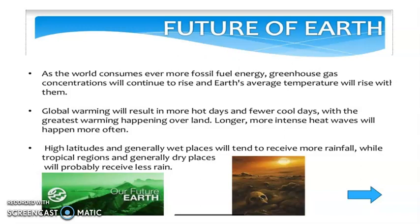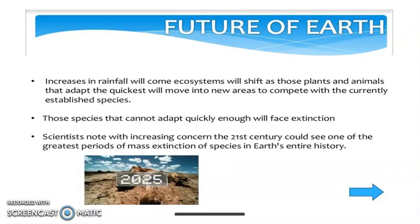Global warming will result in more hot days and fewer cool days, with the greatest warming happening over land. High latitudes and generally wet places will tend to receive more rainfall, while tropical regions and generally dry places will probably receive less rain. Scientists know with increasing concern that the 21st century could see one of the greatest periods of mass extinction of species in Earth's entire history.